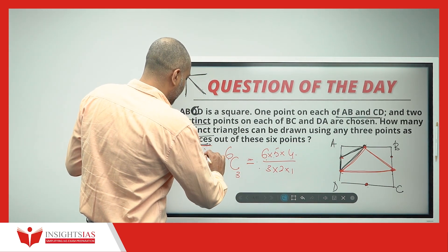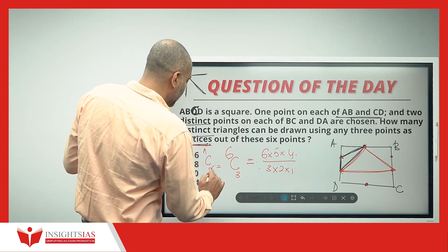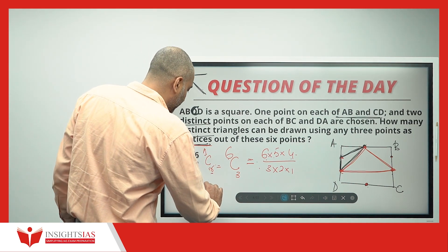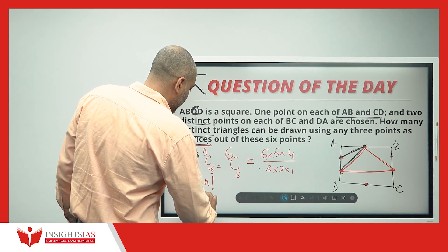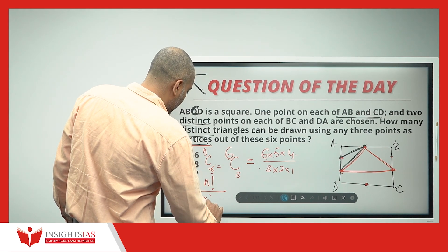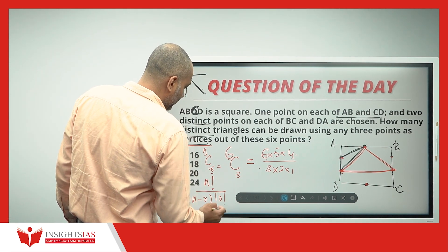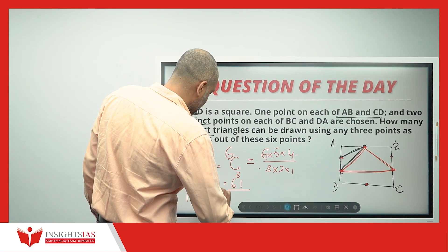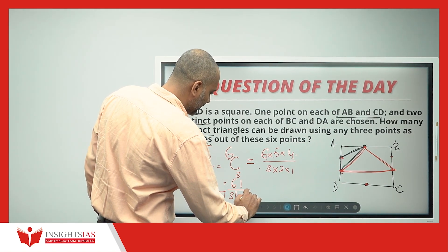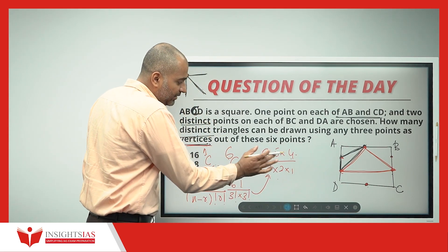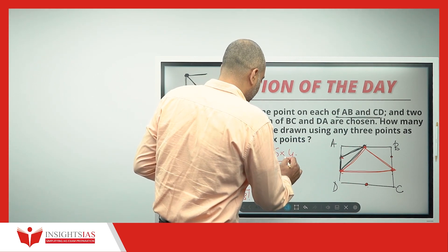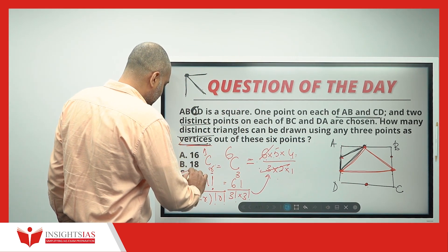Or else, NCR, where N is the number of choices, where R is the rate at which we are choosing, which is given in the formula, N factorial by N minus R factorial into R factorial, where N factorial is 6 factorial, whole divided by 6 minus 3, which is 3 factorial into 3 factorial, which can be written in the short form I have, 6 into 5 into 4 by 3 into 2 into 1. So, 6, 6 cancels, 5 into 4 is 20 triangles can be drawn.